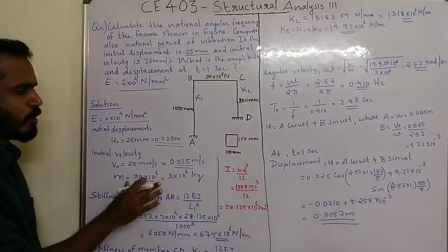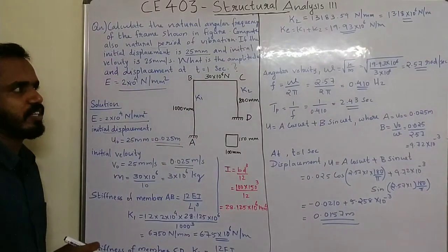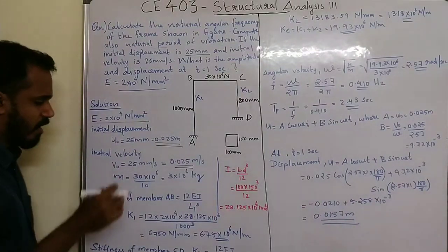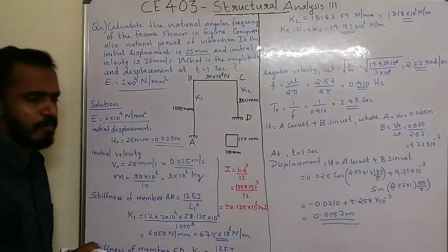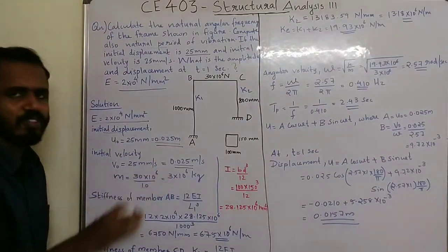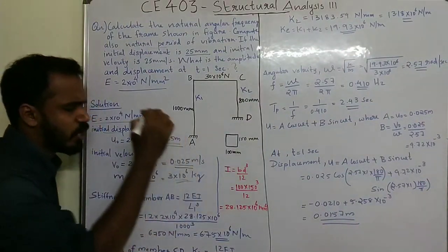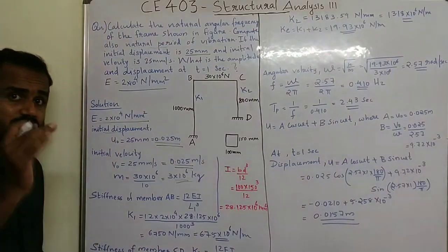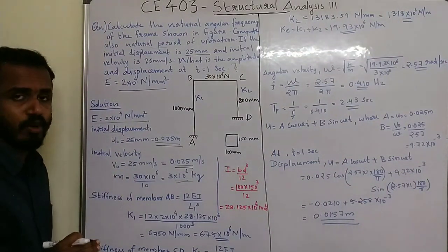Mass is equal to weight divided by g. The load is 3 into 10 raised to 6 newton. Dividing by g equal to 9.81, approximately 10, so mass is equal to 3 into 10 raised to 5 kg.